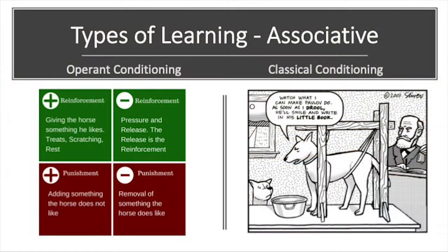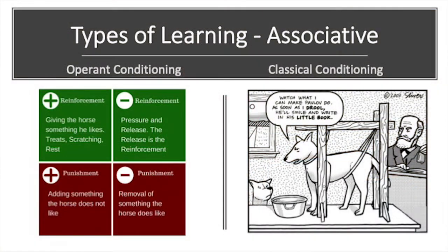The other main type of learning that's applicable for our work with horses is associative learning. Associative learning has two pieces to it. The first one is classical conditioning, which is when the horse learns to associate something with something else.